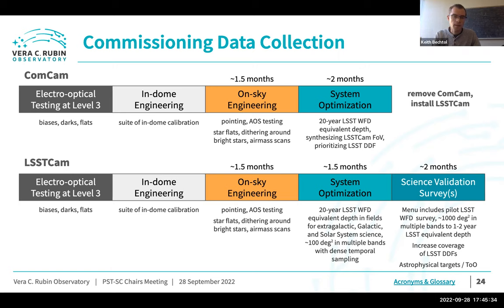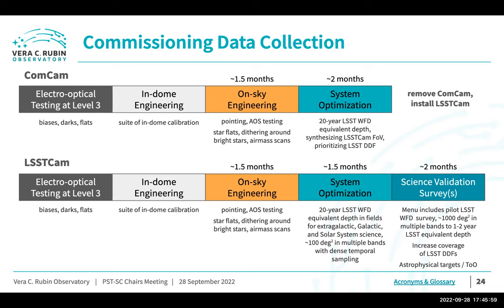Adding a small point about DP1: as we go through and take the commissioning data with ComCam, we will be processing that data every night, possibly with different versions of the science pipelines as we find bugs, fix things, and make changes. When we get to the end of that period, we will stop, take all that data, produce a release of the science pipelines including all the fixes and changes, then reprocess everything with one version. It is that reprocessed version with one fixed version of the science pipelines that becomes DP1.